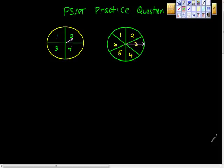It says the two spinners in the figure above are to be spun and each arrow will stop inside a number region. It is equally likely that a spinner will stop in any one of its number regions. What is the probability that the sum of the numbers in the regions where the arrows stop will be at least eight?